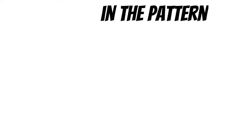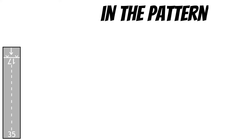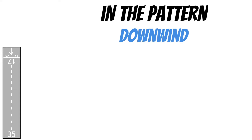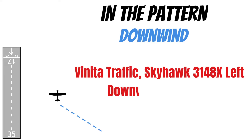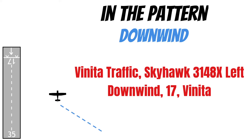Next, we have the radio calls made in the pattern, and there are only three recommended by the FAA. The first one is when you first enter the downwind leg, and that would sound like this: 'Veneta traffic, Skyhawk 3148 X-ray, left downwind, 1-7, Veneta.' Pretty simple.